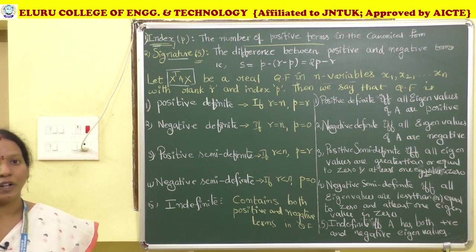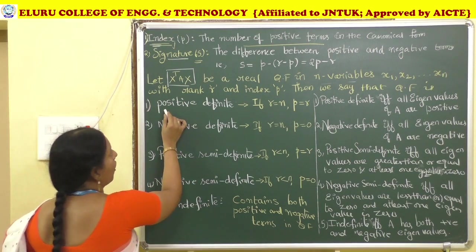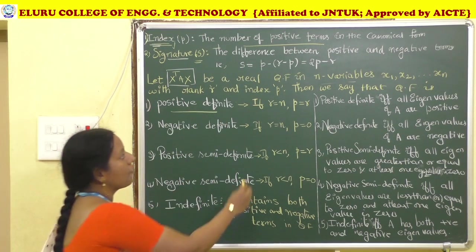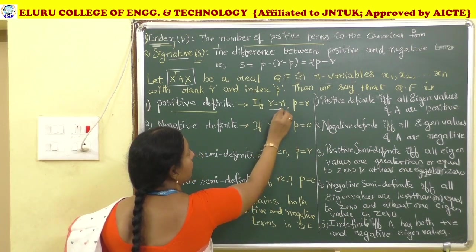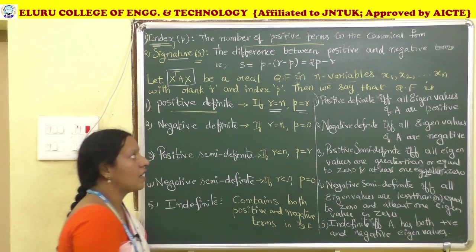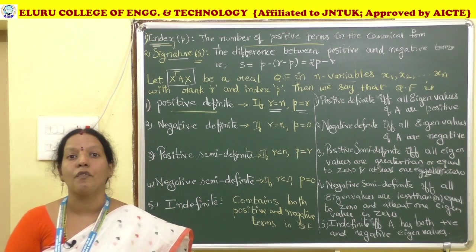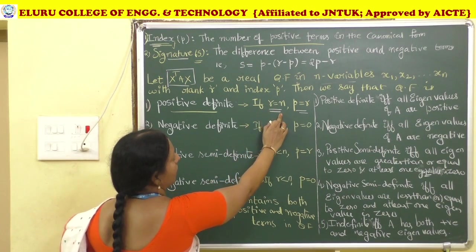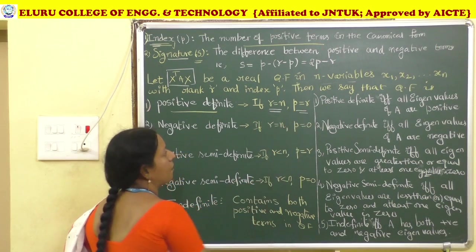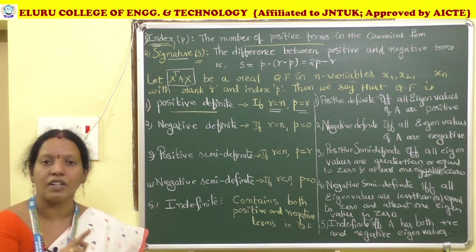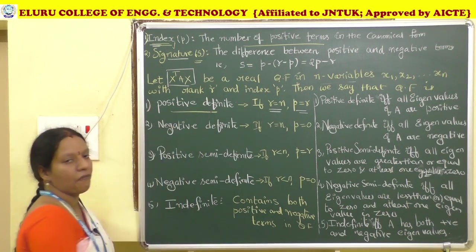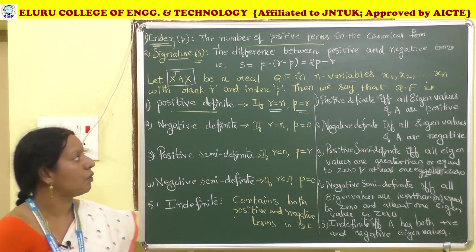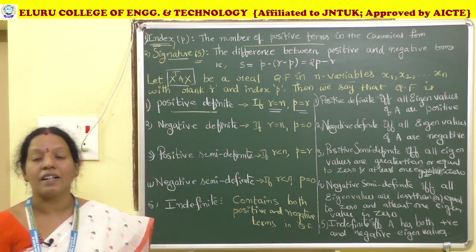The given quadratic form is positive definite if R equals n and P equals R. R is the rank, meaning the number of non-zero terms. So if R equals n and the number of positive terms equals the number of non-zero terms, the quadratic form is positive definite. We can determine the nature of a quadratic form using eigenvalues, or using index, signature, and rank.